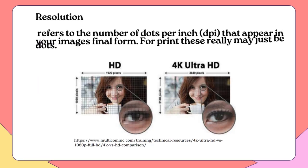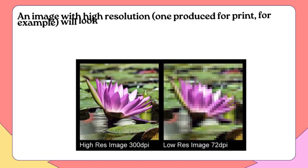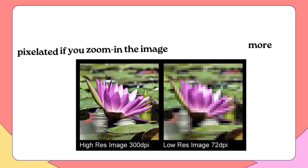Resolution refers to the number of dots per inch (DPI) that appear in your image's final form. For print, these may literally be dots; on screen, however, these dots are referred to as pixels. An image with high resolution, produced for print, will look very smooth with no pixelation. Standard resolution is 300 DPI. An image with low resolution, produced for the screen, needs 72 DPI, and it may look far more pixelated if you zoom in on the image.